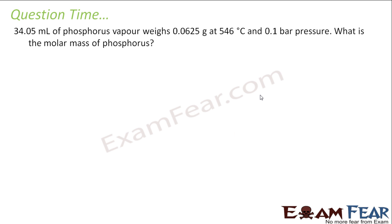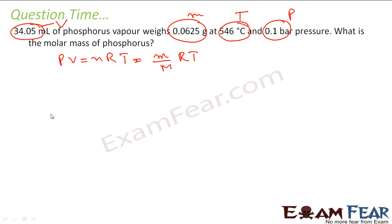Problem 3 says, 34.05 ml of phosphorus, the volume is given, weighs this much gram, that is, my mass is given, at this temperature, that is, temperature is given, at this pressure, pressure is given, what is the molar mass? So, I know, PV is equal to nRT, this is my formula, but since I am looking for mass and molar mass, I will replace n with mass by molar mass into RT. What I am looking for is the molar mass. So, this value is nothing but mRT by PV.